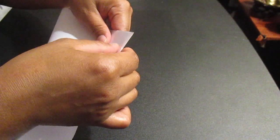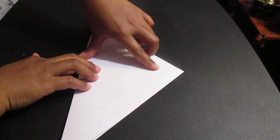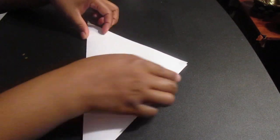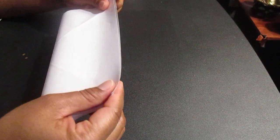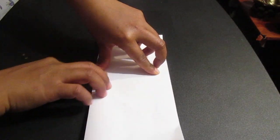First of all, the same process. Fold your square paper just like so. Open again. Open, fold it. This side, open, the other side.